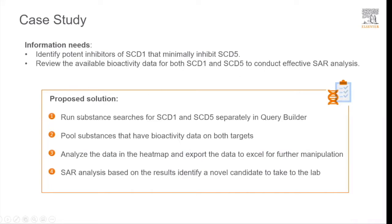To do that in REACSIS, we will run substance searches for SCD1 and SCD5 separately in Query Builder. We'll pool those substances that have bioactivity data on both targets. And we'll analyze those data in the heat map and export those data to Excel for further manipulation, as well as for extensive SAR analysis to identify novel content to take to the lab.